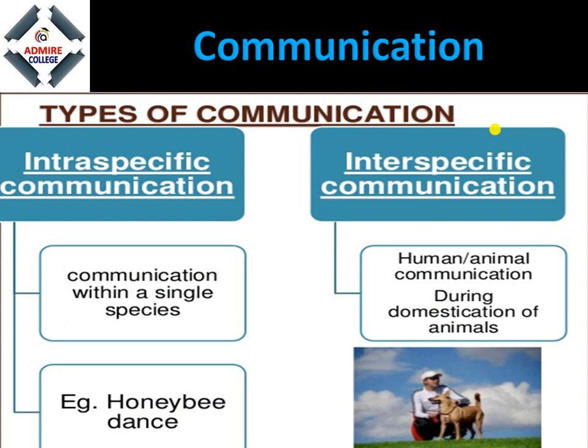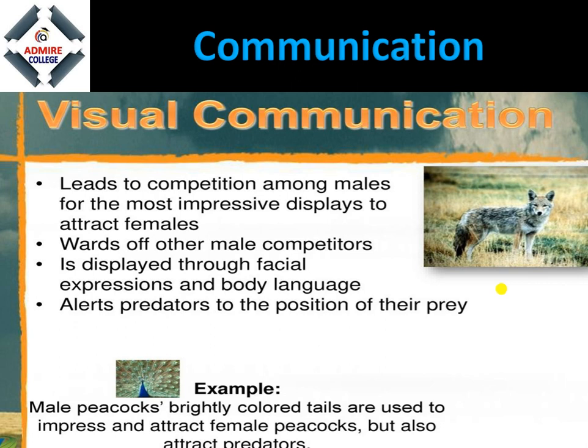Types of communication: there are two major types — intraspecific and interspecific. Intraspecific means communication within a single species — for example, communication between human beings, or between honey bees. Interspecific means communication between different animals — for example, between a human being and a dog.